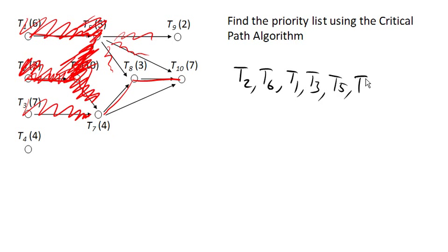If I remove this and say, what's my longest path now? It's going to be here. Task 8 and then task 10. Right? 3 and 7 gives us our longest path now. So we'll go ahead and add task 8.